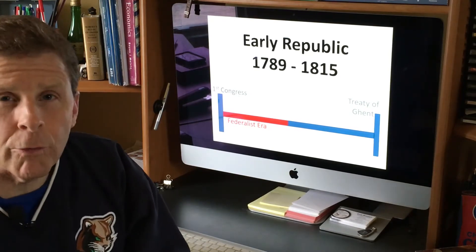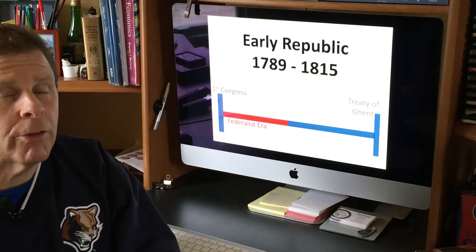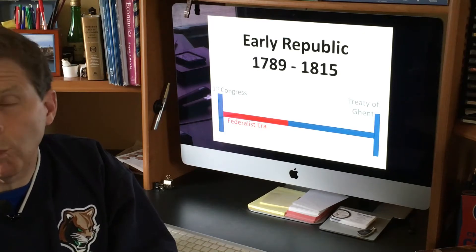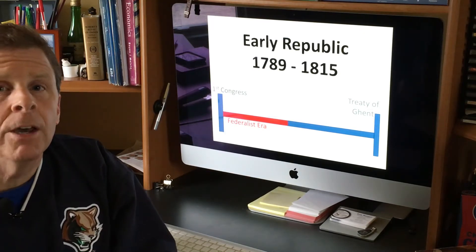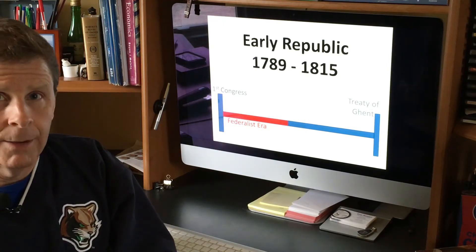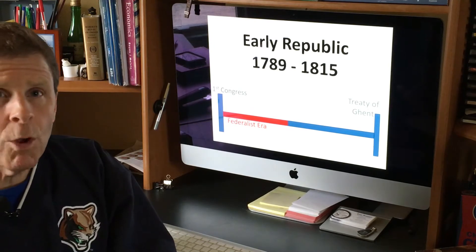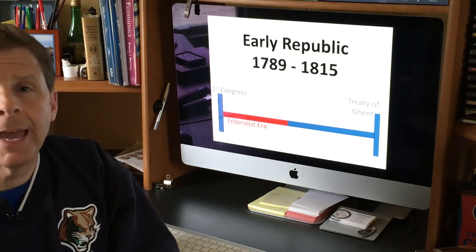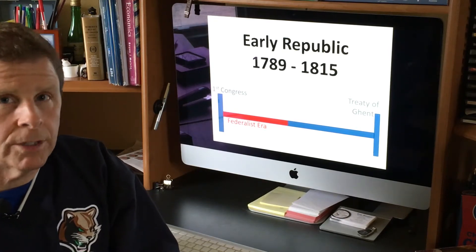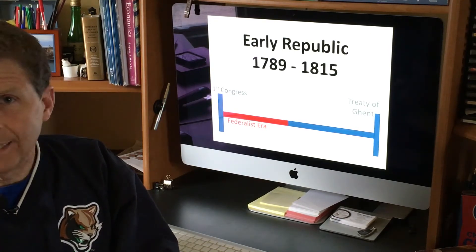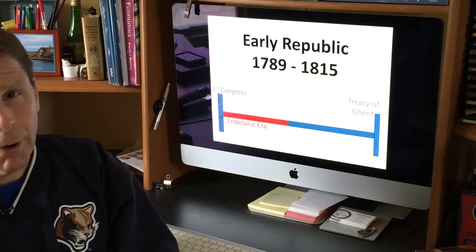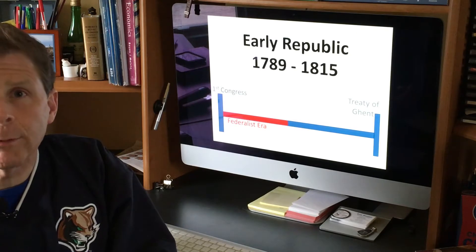What do you need to know from this mini sub-period? The first thing is actually already on the screen. That first Congress is one of the most important parts of the Federalist Era. When they come in and they set up the court system, when they come in and they pass the Bill of Rights, when they come in and they pass Hamilton's economic plan and set up the national debt with the assumption of state debts — all that big stuff that was done by the very first Congress is probably the biggest positive thing about the Federalist Era.